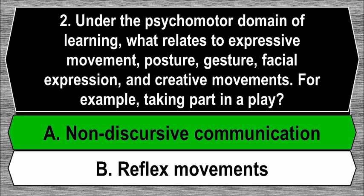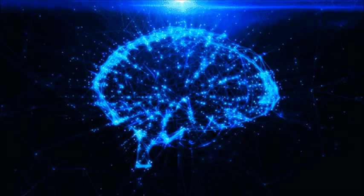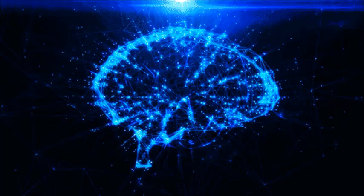The best answer is A, non-discursive communication. It is a type of communication through bodily movements ranging from facial expressions to sophisticated sequences of movements. Examples are body postures, gestures, and facial expressions efficiently executed in skilled dance movements. On the other hand, a reflex or reflex action is an involuntary and nearly instantaneous movement in response to a stimulus, made possible by neural pathways called reflex arcs. Thus, a reflex is not an example of an expressive movement.